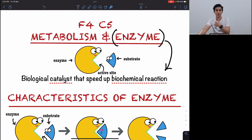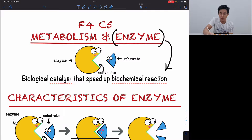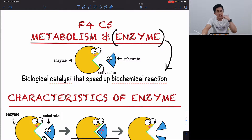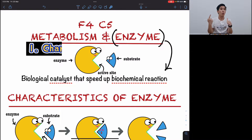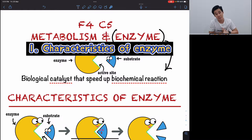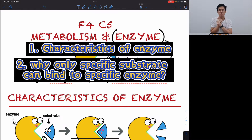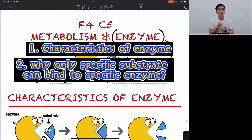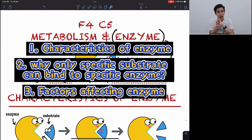In this video, we'll be going through Form 4, Chapter 5, Metabolism and Enzymes, but focusing only on enzymes. We'll learn the characteristics of enzymes, why specific substrates bind to specific enzymes, and the factors affecting enzymes — how different factors can affect enzymes.